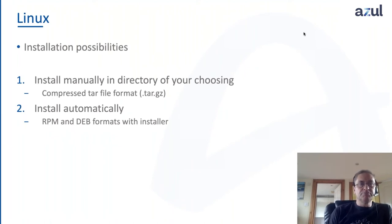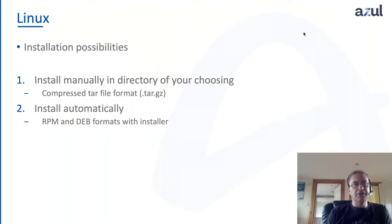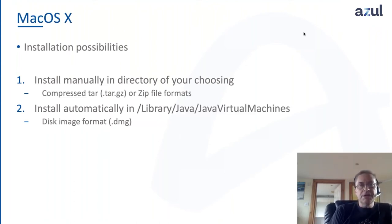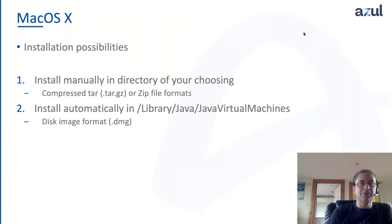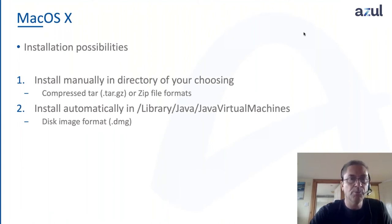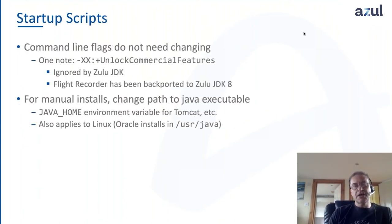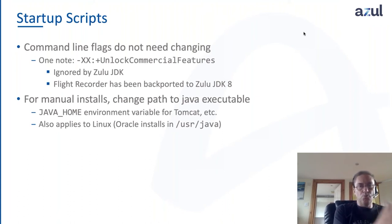On Linux, similarly, there are two options: for the automated install there are either an RPM file or a Debian file depending on which distribution of Linux you're using. On Mac OS there are also two ways: for a manual install we provide either a compressed tar file or a zip file, and for the automated install there is a DMG disk image file that installs into the standard directory at /Library/Java/JavaVirtualMachines so your applications can pick up Java from there. The only other thing you need to do is check whether any environment variables need updating to point at the new installation.